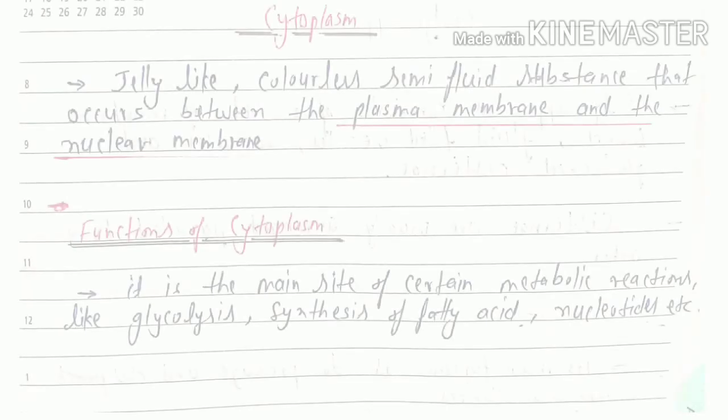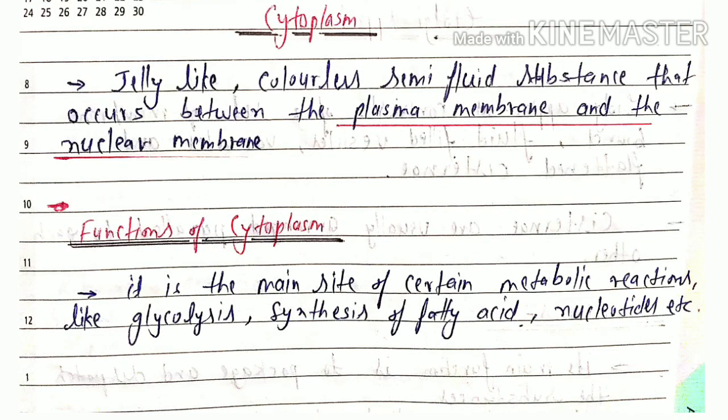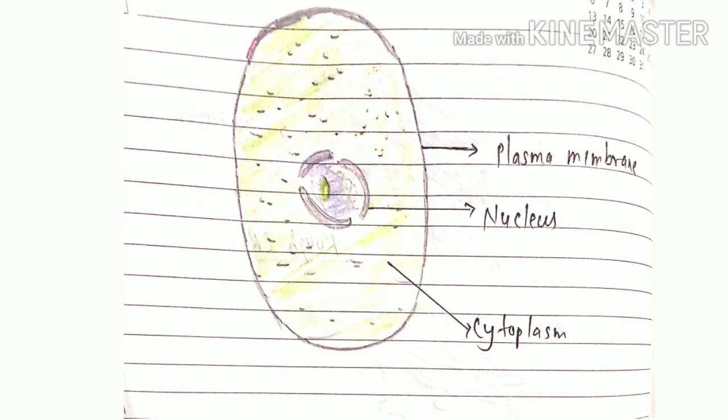The next cell organelle is cytoplasm. Cytoplasm is jelly-like colorless semi-fluid substance that occur between the plasma membrane and nuclear membrane.